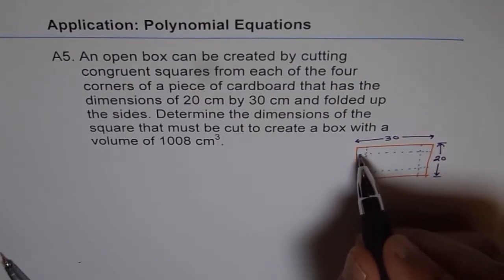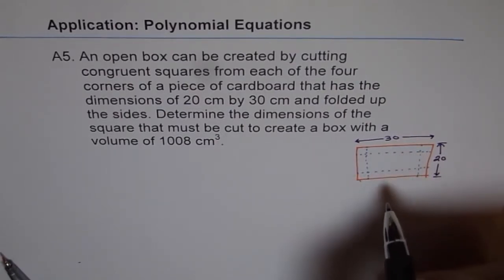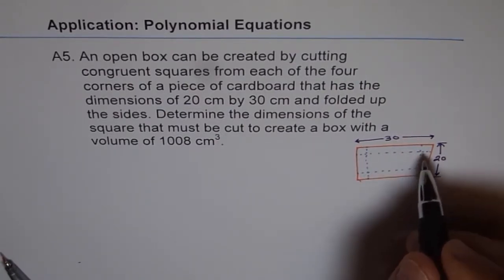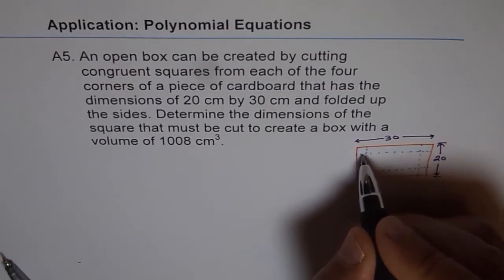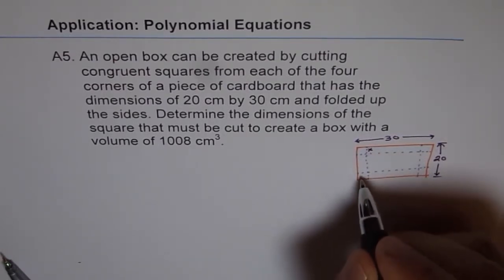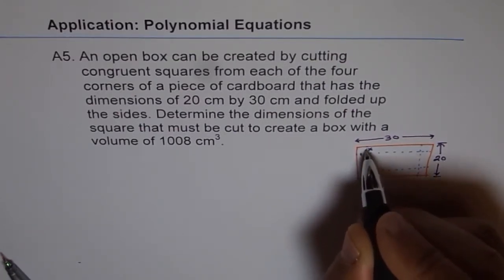So when you cut these corners and then fold the corrugated box, you get a 3-dimensional shape, right? And the height of that will be the side of the square. And let the side of the square be x, both sides. This is also x and that is also x. That means these two sides are equal.